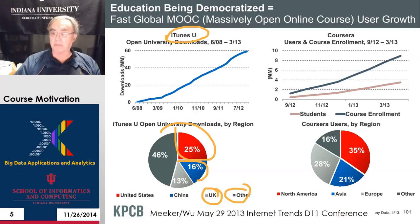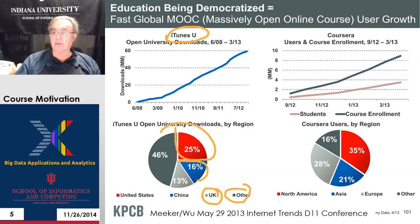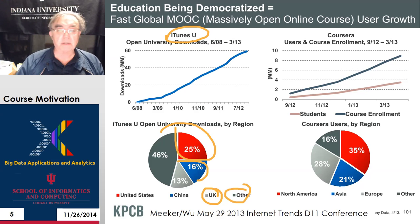Here we have Coursera, which is of course the most famous of the startups in this area. Udacity and Khan Academy are other examples, perhaps equally comparably successful. Coursera's course enrollment is up to over 8 million, and the number of students is 4 million, because obviously a given student can enroll in more than one course. You again have regions with North America, Asia, Europe, and other. Coursera is a US activity and not special to the United Kingdom.